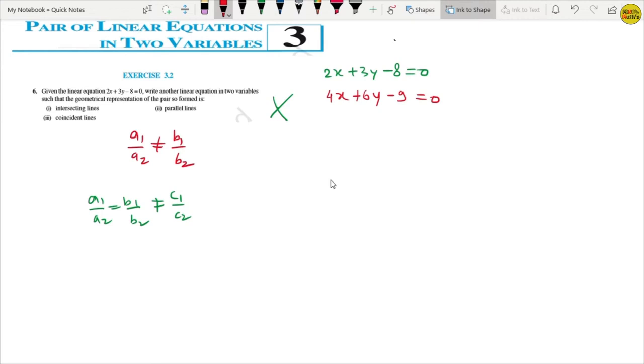How much is a1 by a2? 2 by 4. b1 by b2, 3 by 6. And c1 by c2 minus 8 by minus 9. This goes to 2. How much is 1 by 2? Is it equal to 1 by 2? Is it equal to 8 by 9? No. So what is it? a1 by a2 equals to b1 by b2 but not equals to c1 by c2.